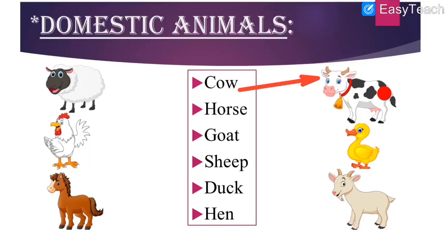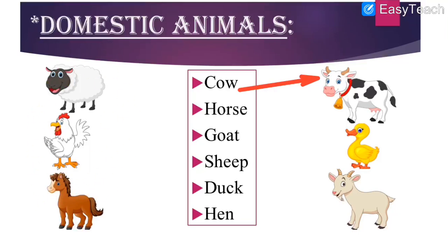Number two: H-O-R-S-E, horse. Can you see horse on the left or right hand side? Horse is on the left hand side. One, two, three — here is the horse. Let us match the spelling with the picture of horse.